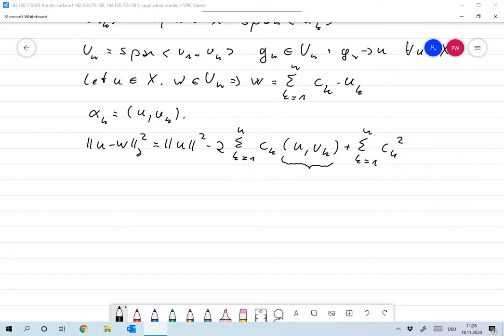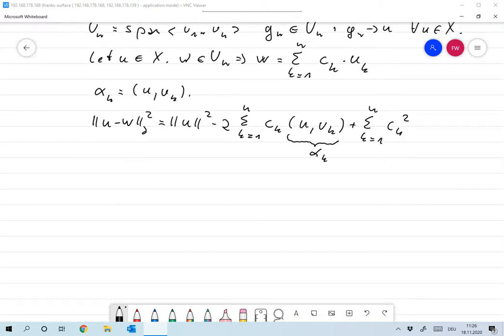So we write this in the following form. This is of course alpha K. And now we can write this as the norm of U squared plus the sum from 1 to N CK minus alpha K squared.